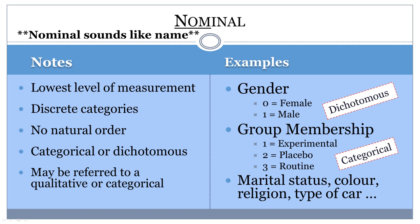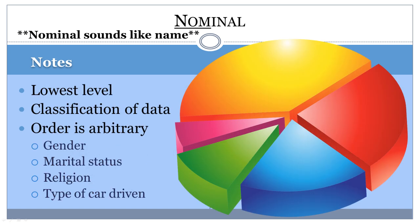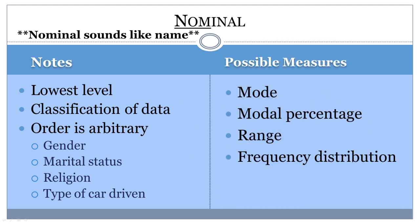Sometimes researchers refer to nominal data as categorical or qualitative because it is not numerical. Since nominal data is simply categorical, it allows for only a few statistical tests. It makes sense to report the number or percentage of people who are male or female in a particular group. This data is often presented in bar or pie charts. The only measure of central tendency that makes sense with nominal data is the mode.